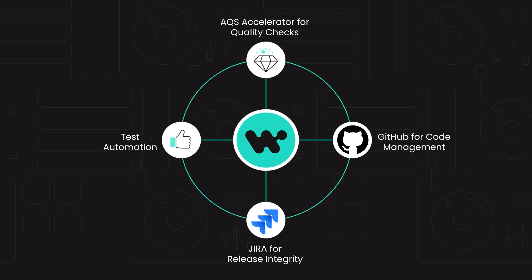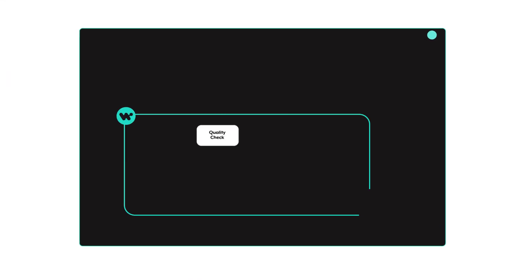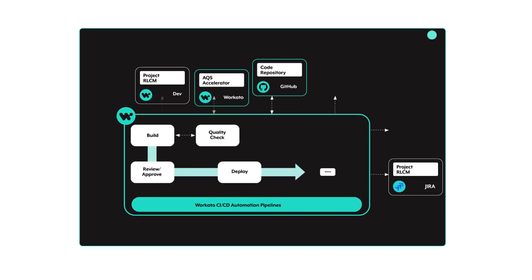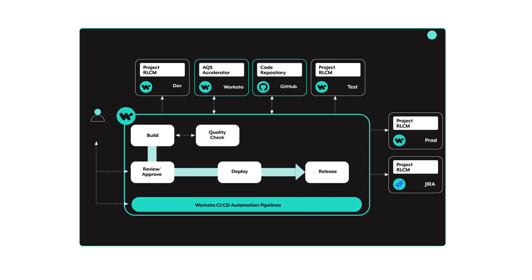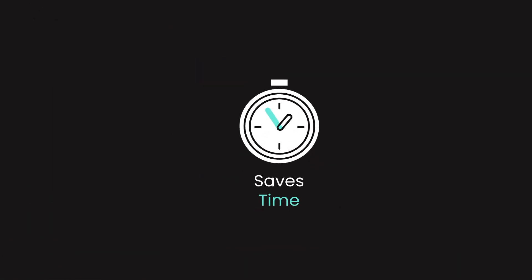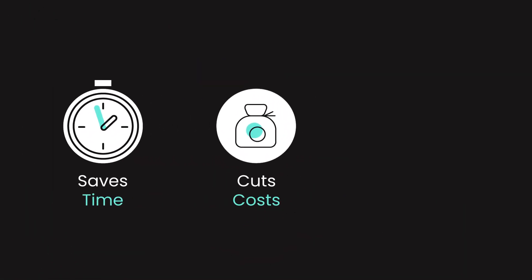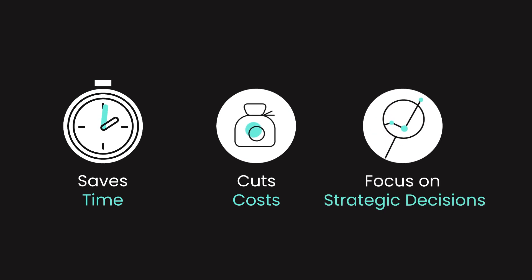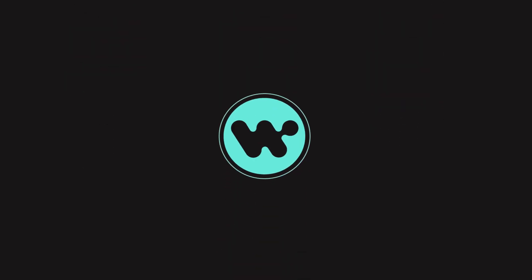and test automation to ensure the highest standards. WorkAuto's CI-CD Automation Accelerator reduces the time spent on quality checks, ensuring high-quality releases into production environments. This not only saves time, but also cuts costs and resource use, freeing your team to focus on strategic initiatives rather than technical debt and slow release cycles.